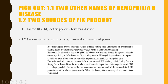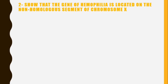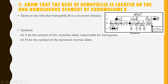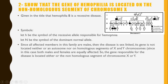For question two, we must show that the gene of hemophilia is located on the non-homologous segment of chromosome X. Looking at our pedigree, the first thing to note is that the only affected individuals are males. It's already given that hemophilia B is a recessive disease, so we symbolize the lowercase allele for the recessive hemophilic allele and uppercase for the dominant normal allele.